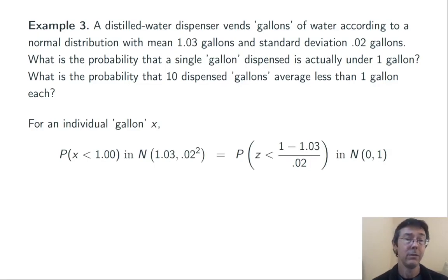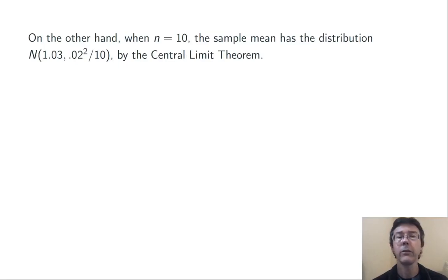For an individual gallon, we want the probability of drawing an x value less than 1 in the normal distribution with mean 1.03 and standard deviation 0.02. We compute a z-score for that. We do x equals 1 minus the mean 1.03 divided by the standard deviation 0.02, which is all equal to negative 1.50. We take the p-norm of that, the normal CDF of that, we get 6.68%. So it's somewhat rare, a little less than 7%, but not unheard of.